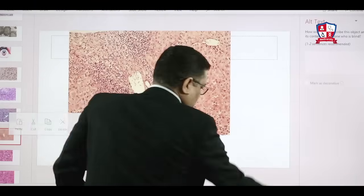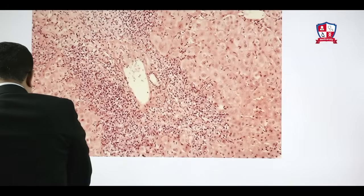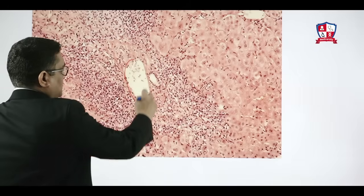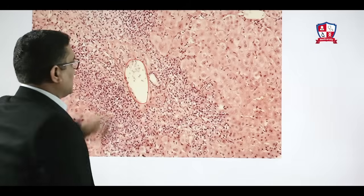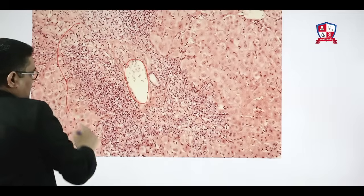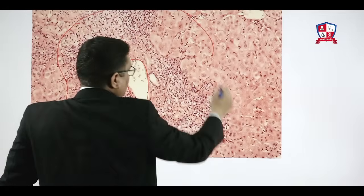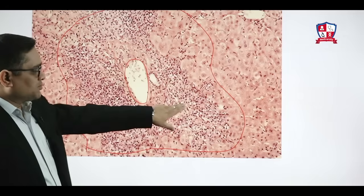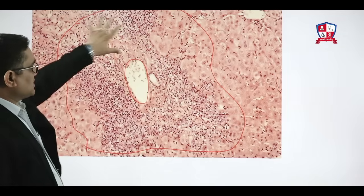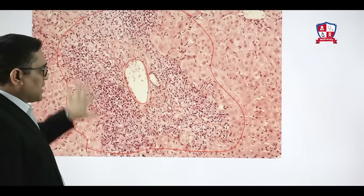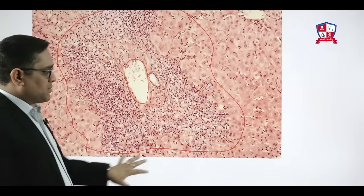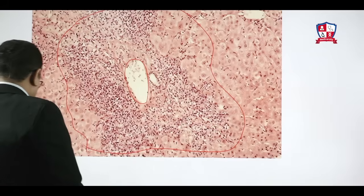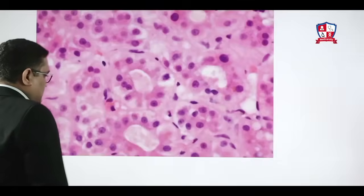Looking at the diagram: this is autoimmune hepatitis where we can see a portal tract with its duct. The entire area is occupied by lymphocytic infiltrate causing damage to the limiting plate — this is interface hepatitis. Lymphocytic infiltrates are causing damage around the periportal area, moving toward the pericentral area.